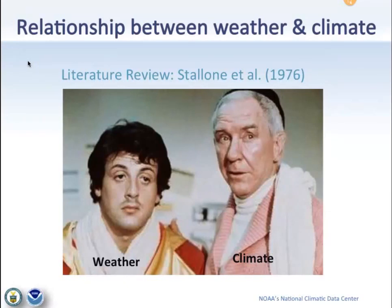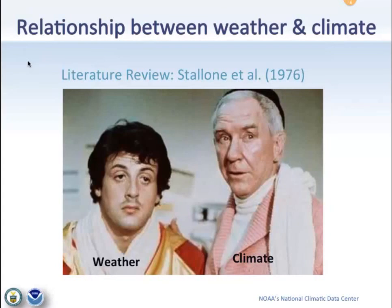The key literature here is a document written by Salone and others in 1976 that completely characterizes the relationship between weather and climate. Weather throws the punches, but climate trains the boxer. When you change the trainer, you change the overall composition of the punches thrown — some punches more often, some less often, some more effectively, some less. You still don't know exactly what he'll do in a specific moment, but if you watch him for a while, you know he'll throw a lot more left hooks. That's the relationship between weather and climate, and the core of characterizing it is data.